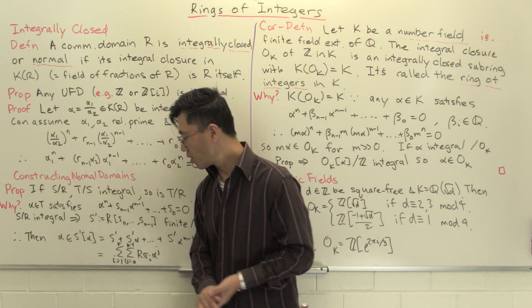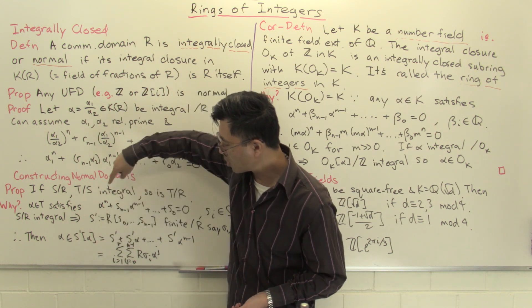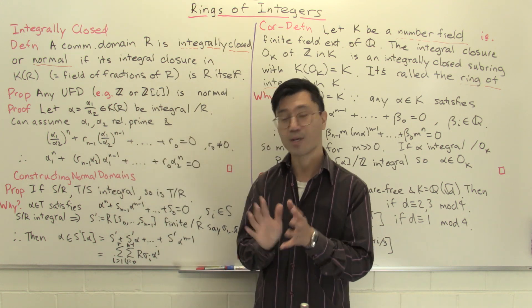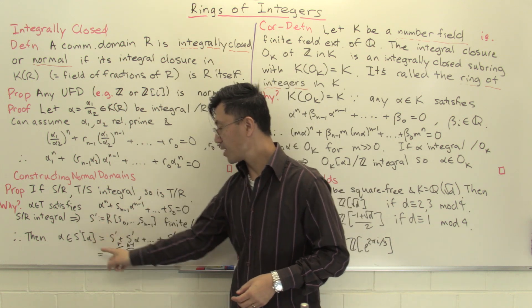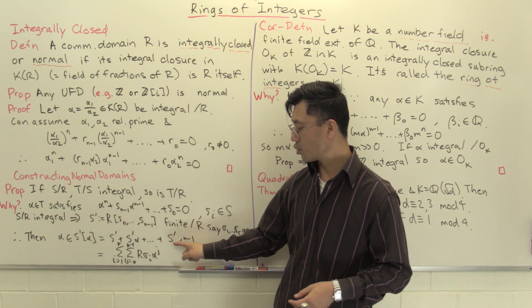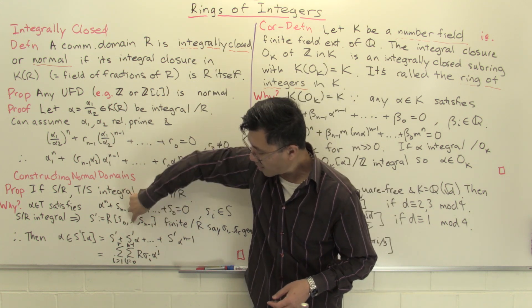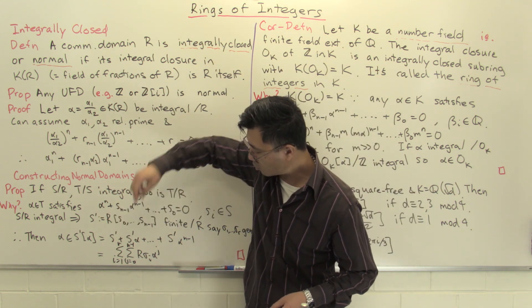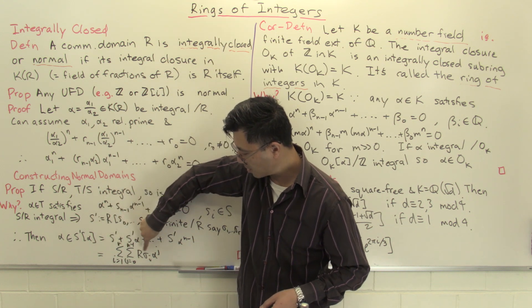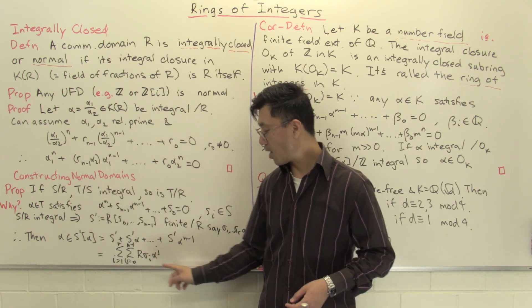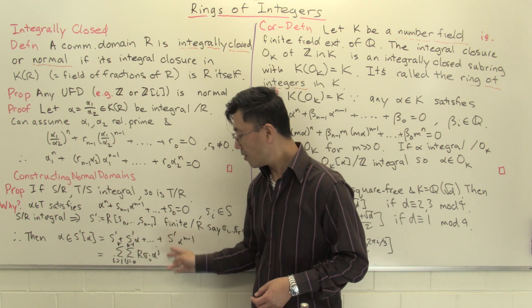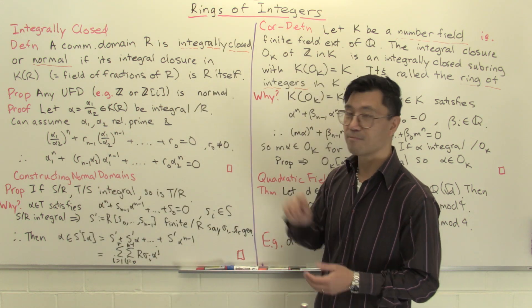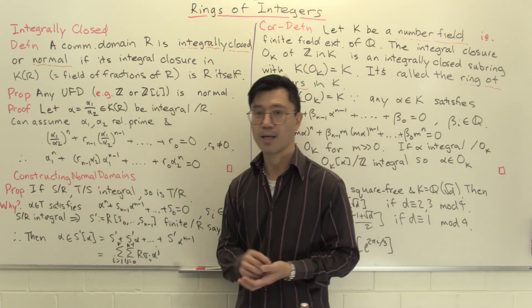Alpha satisfies a monic polynomial over S' because we chose S' to contain the coefficients. So S'[alpha] as an S'-module is S' + S'·alpha + ... + S'·alpha^(n-1). Replacing each S' with an R-linear combination of the σᵢ's, we can write this as a double sum. Since there are finitely many σᵢ's and finitely many powers of alpha, this is a finitely generated R-module. Hence alpha is integral over R, giving us the transitivity of integral extensions.